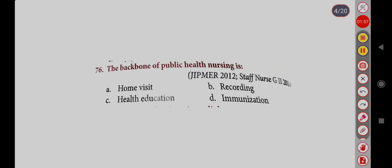The backbone of public health nursing is: Option A, Home Visit; Option B, Recording; Option C, Health Education; Option D, Immunization. Correct answer is Option A, Home Visit.